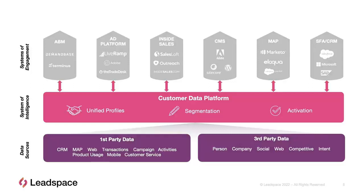Third-party data includes firmographic data — company name, size, location, and subsidiaries. Demographics covers information about contacts and companies, blending in data available from social and web sources. You can also layer on more specific data around competitors or intent. A data platform should allow you to define profiles by the system the data is going into, since the data you need for an ABM solution, marketing automation, or Salesforce all need to be coordinated. The CDP should support custom mappings and dynamic mappings to make those solutions work best.